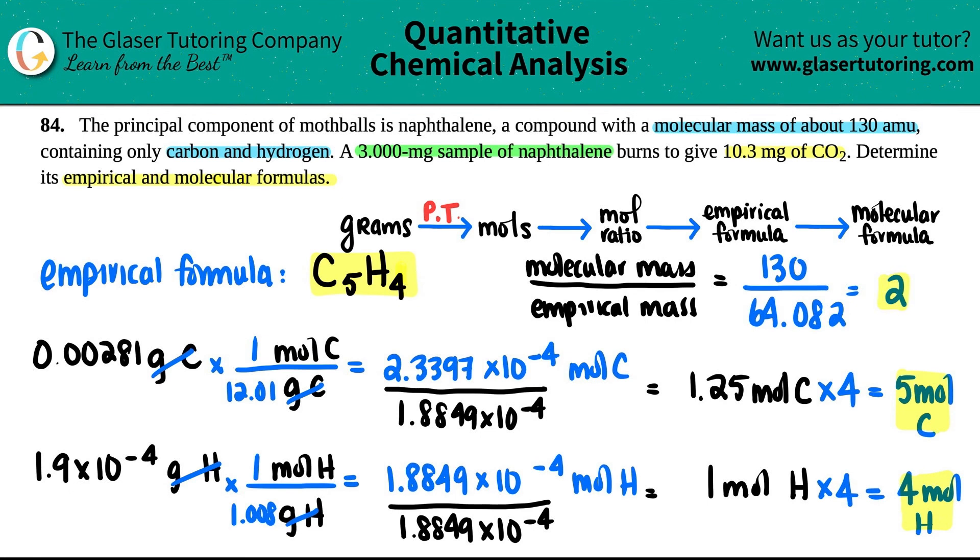Now what does this represent? That means that the molecular formula would be two times greater than the empirical formula. So all of these little subscripts, specifically the five and the four, you have to multiply by two. That's all you got to do. So it would be C, and I'll maybe put it down here. C, five times two is 10. And then H, four times two is eight. And that is your molecular formula.